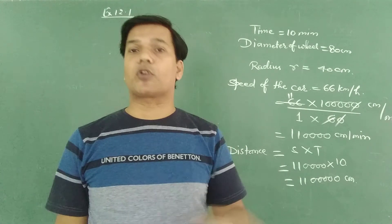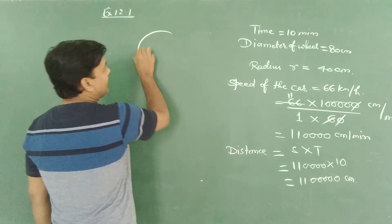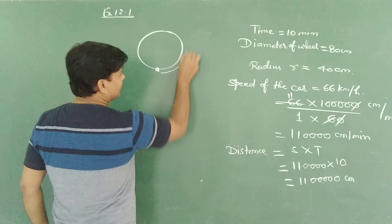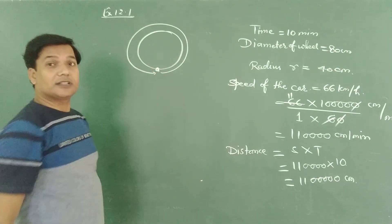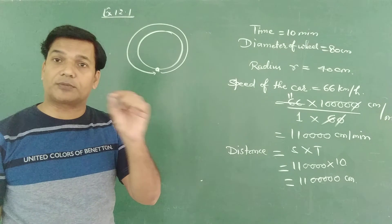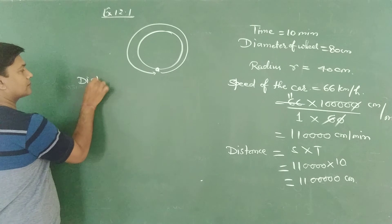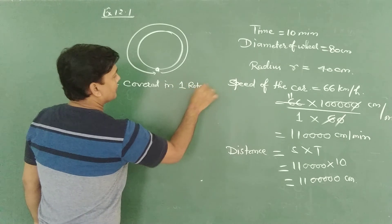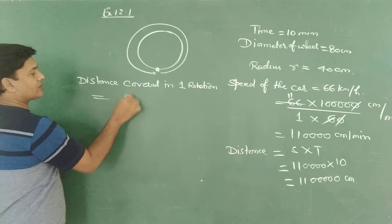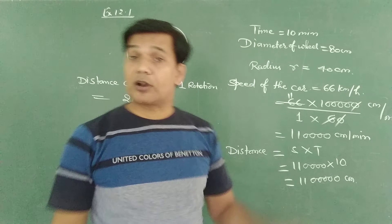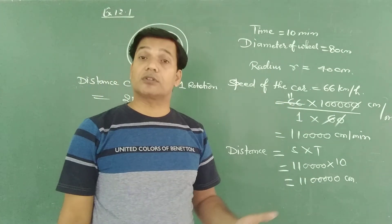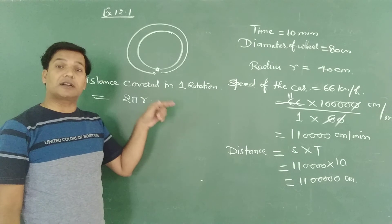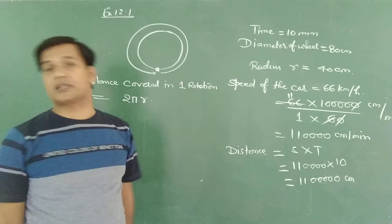Now what we have to find out is the number of rotations. In one rotation, the distance covered by the wheel equals the circumference of the wheel. If it rotates one time, the distance covered equals 2πr. To find the total number of revolutions, we divide the total distance traveled by the distance covered in one rotation.